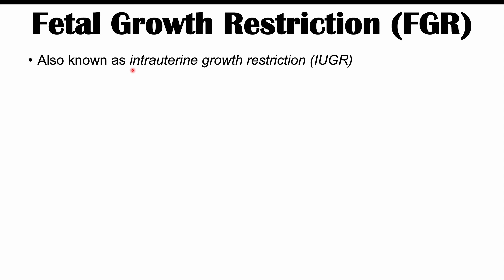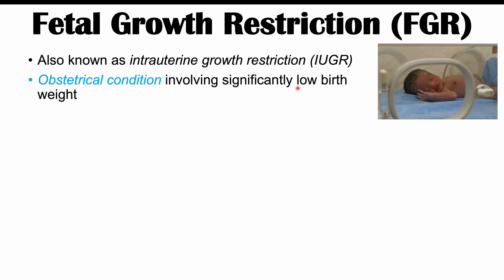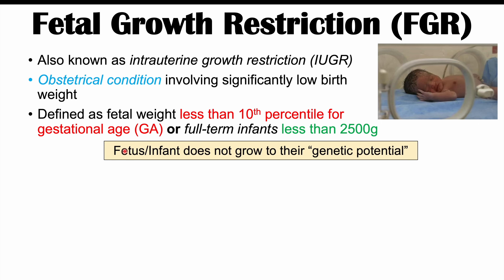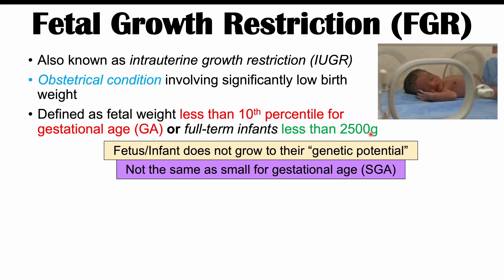Fetal growth restriction is also known as intrauterine growth restriction or IUGR. It is an obstetrical condition involving significantly low birth weight — more specifically, it's defined as a fetal weight less than the 10th percentile for gestational age, or a full-term infant weighing less than 2,500 grams. However, some very small fetuses or infants may naturally be below these thresholds, which would be considered small for gestational age.